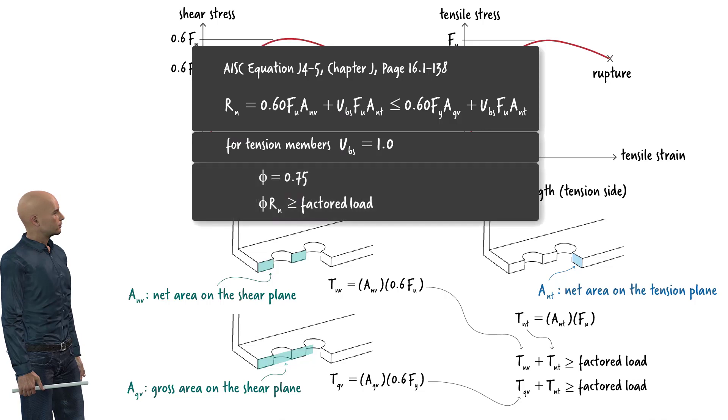AISC uses a resistance factor of 0.75 for block shear. Therefore, the equation for the block shear limit state can be expressed this way.